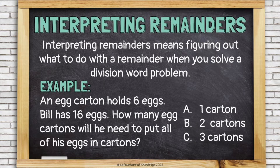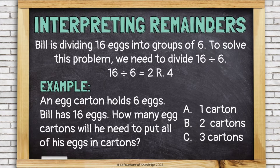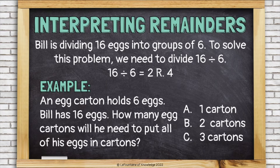A: one carton. B: two cartons. Or C: three cartons. Bill is dividing 16 eggs into groups of 6, so to solve this problem we need to divide. 16 divided by 6 is 2 remainder 4.